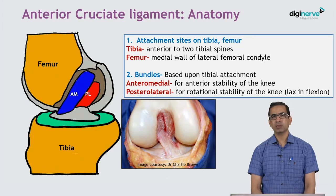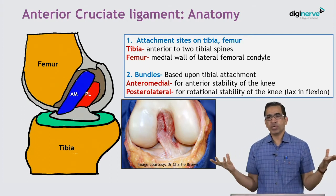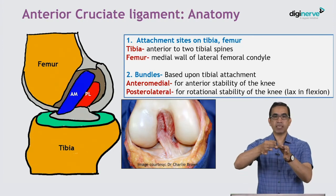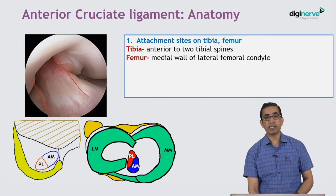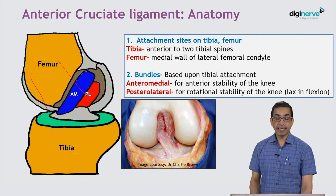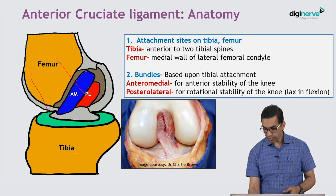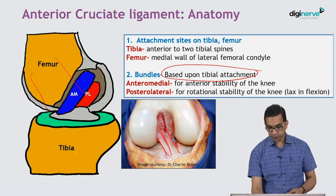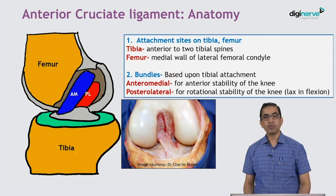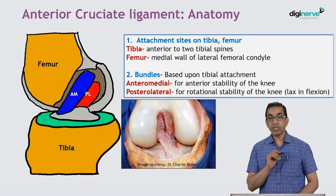These days this is asked in exams: the ACL theoretically and practically has two bundles. Though it may look like one, functionally it has two — the anteromedial bundle and the posterolateral bundle. The anteromedial bundle attachment is based on the tibial side. The anteromedial bundle primarily provides anteroposterior stability, i.e., front-to-back stability, while the posterolateral bundle provides rotational and pivoting stability.